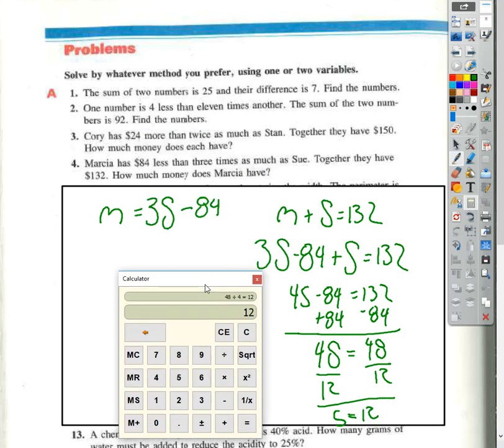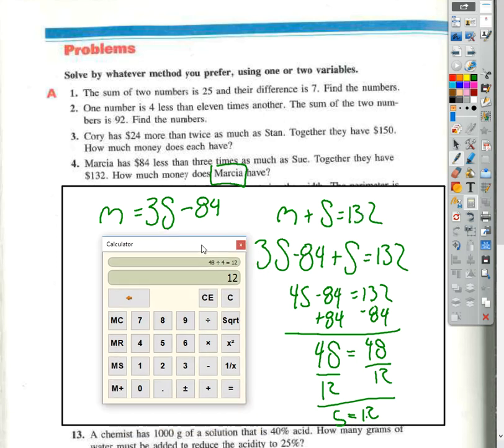And again, that gives us S is equal to 12. So that means Sue has 12 bucks. But man, you got to find out what Marsha has. So if Marsha has $12, well, something plus 12 is 132. Well, 120, right? 120 is worth - hold on a second. What? This is eighth grade.